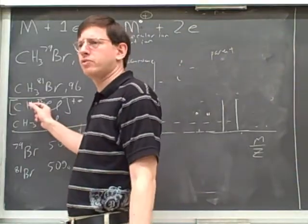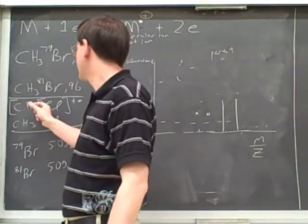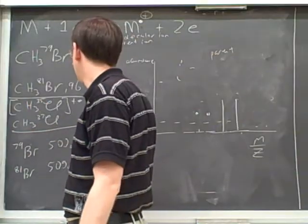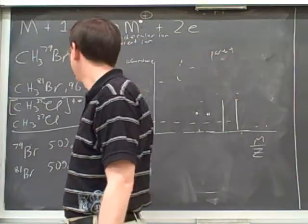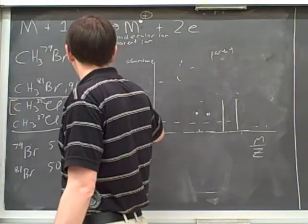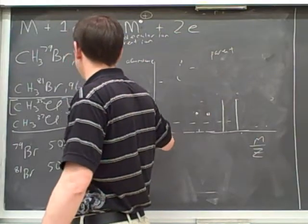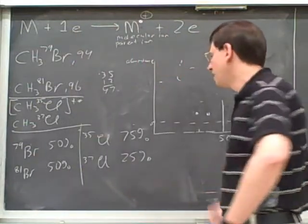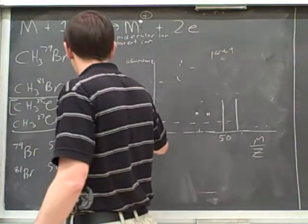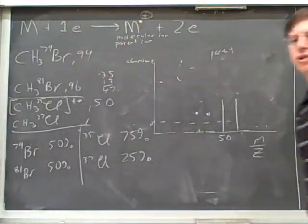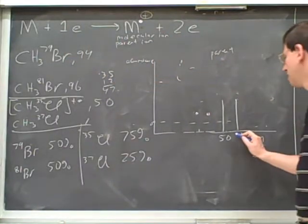Now, where is this going to absorb? What horizontal point? 450. 450? No, 50. 50. So 35 plus 12 is 47, and three hydrogens, that sounds right, 50. And now the other one will absorb at, how about the one with the chlorine 37? 52.